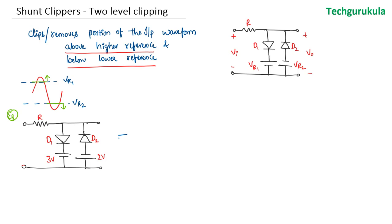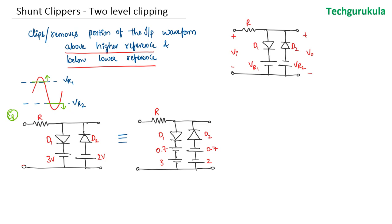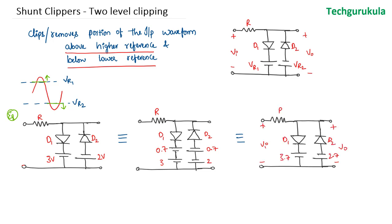We find the equivalent circuit by substituting the practical diode with an ideal diode model. Taking the cut-in voltage for a silicon diode as 0.7V and substituting, the new reference voltages become 3.7V and minus 2.7V. The circuit diagram is redrawn with these updated reference voltages including the cut-in voltages.